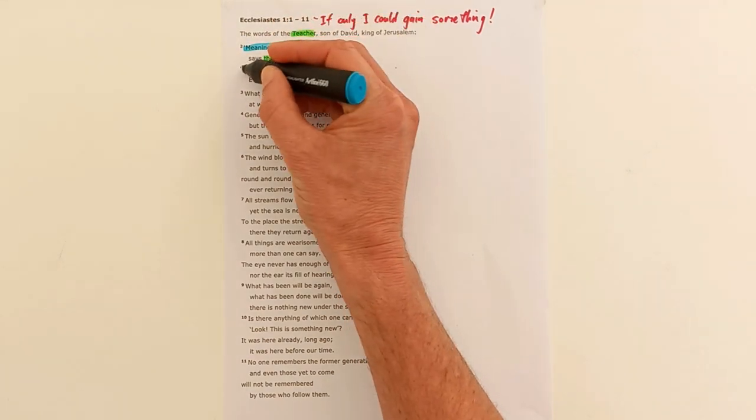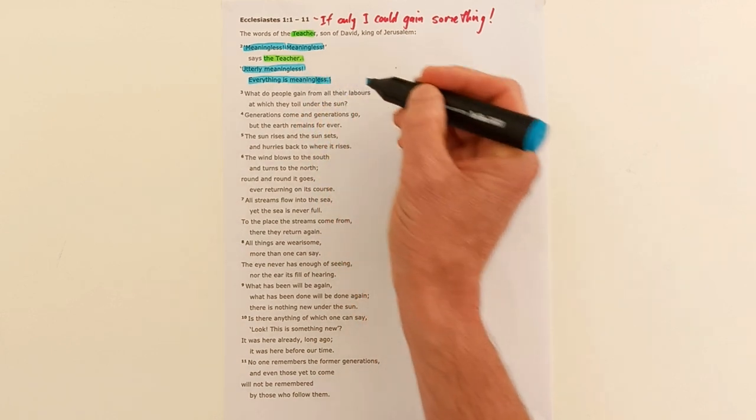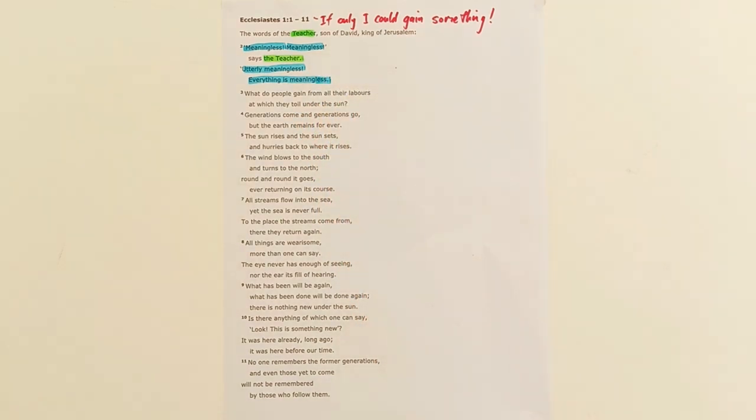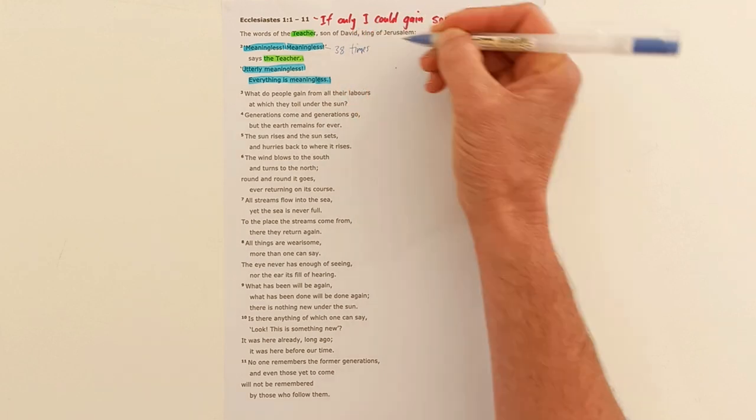The teacher starts with the famous beginning of Ecclesiastes: meaningless, meaningless, utterly meaningless, everything is meaningless. We're going to see that word repeated 38 times in the book of Ecclesiastes.